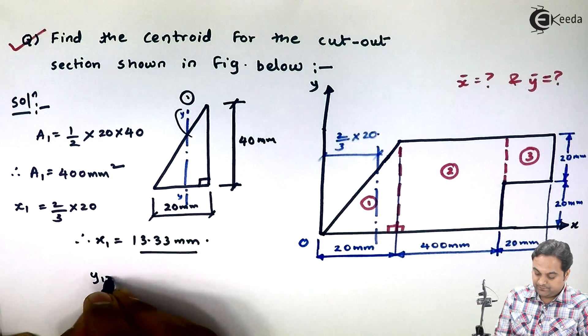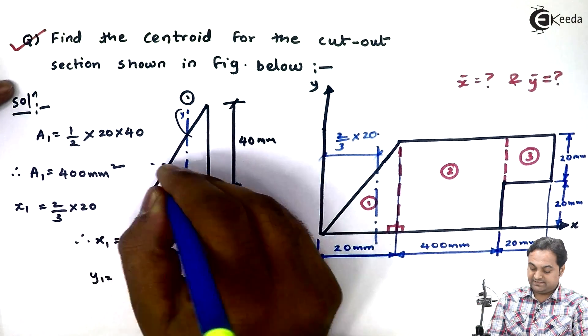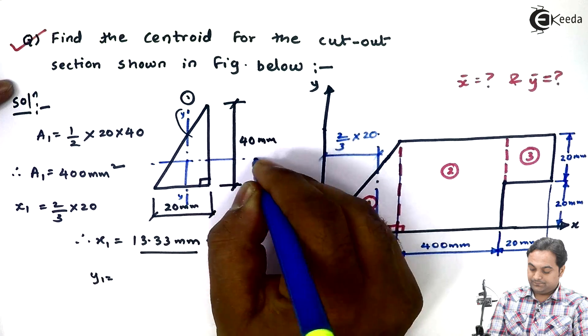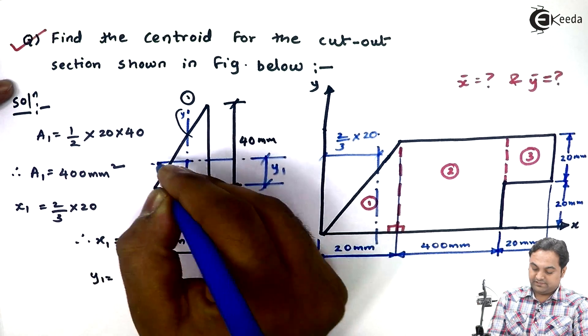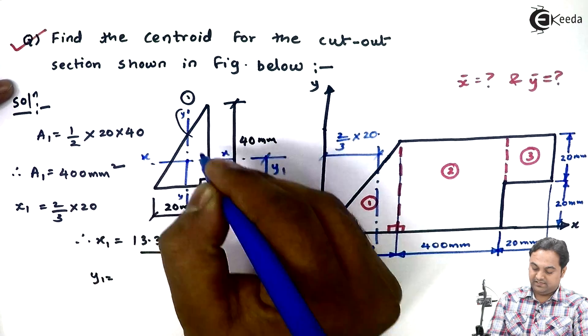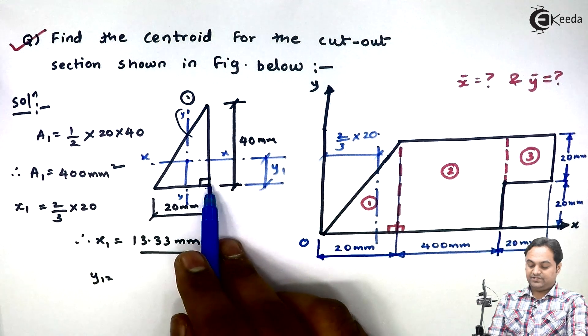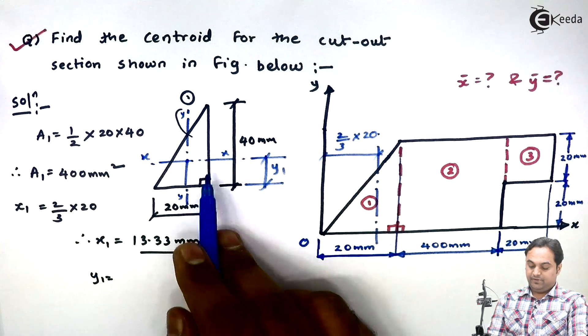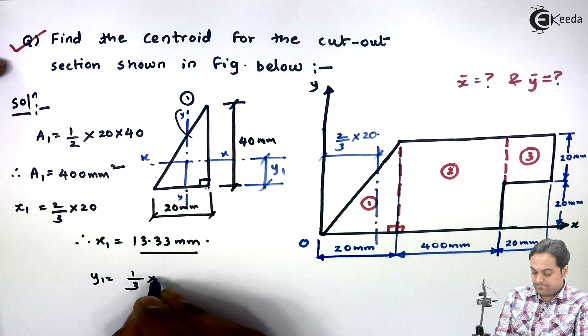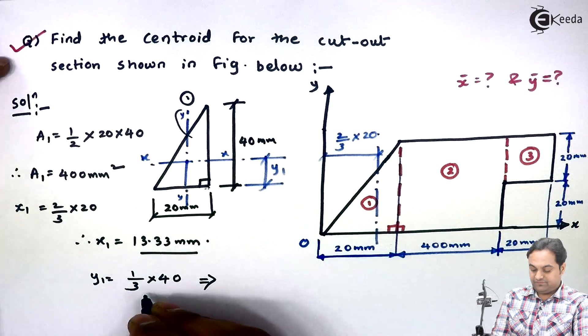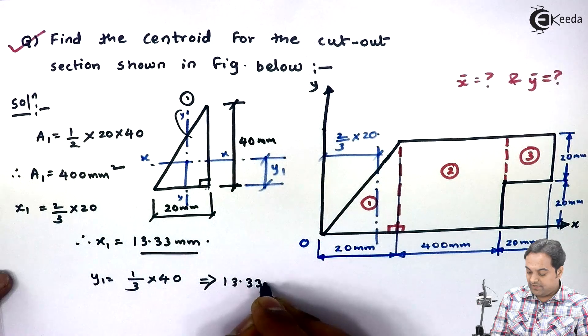Next y1 - y1 will be the location of x axis for the first triangle as a first figure. So y1 value will be, since I'm measuring it from the base, it would be one third of this height which is 40. So this y1 value comes out to be again 13.33 mm.